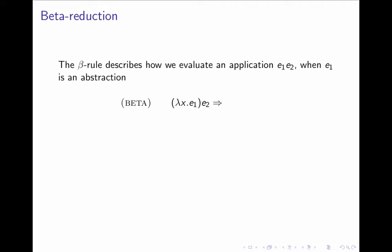The only central rule is that of beta reduction. And the beta rule describes how we evaluate an application when E1 in the application is an abstraction. So if we have an abstraction, lambda X, E1, and then we apply this to E2,